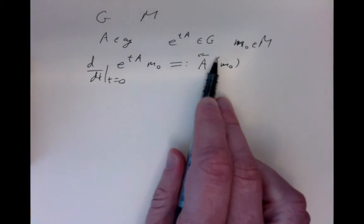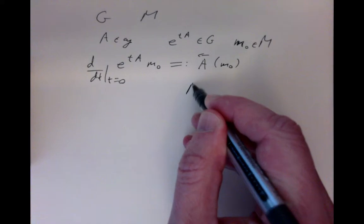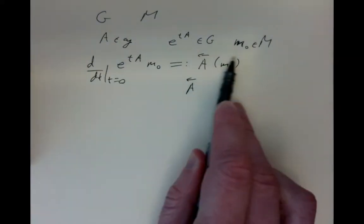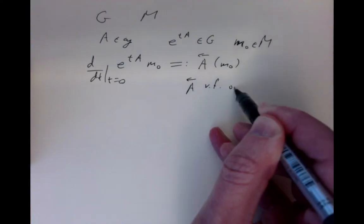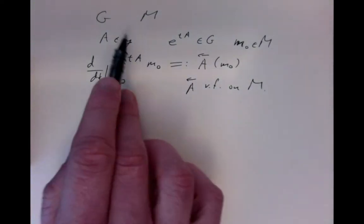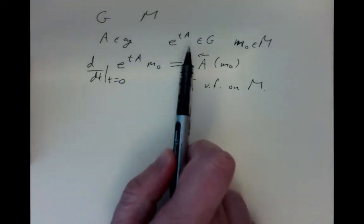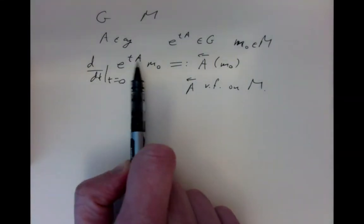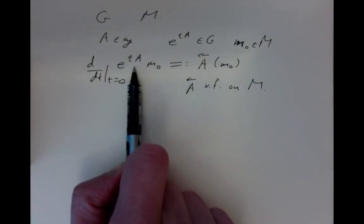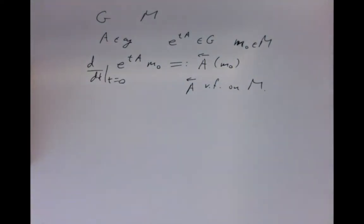This is not the right invariant vector field on the Lie group anymore — this is a new vector field on the manifold M, because it's the velocity of the point as it moves. So when a Lie group acts on a manifold, its one-parameter subgroups act on the manifold, and we can differentiate the action in time t to find a vector field.